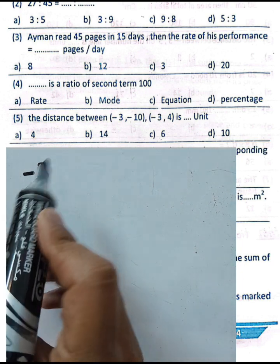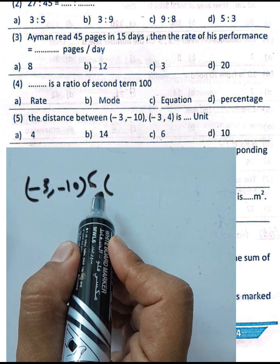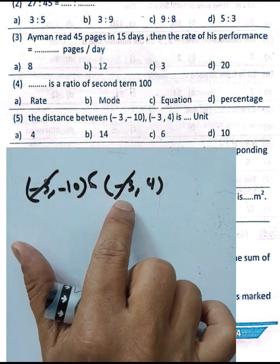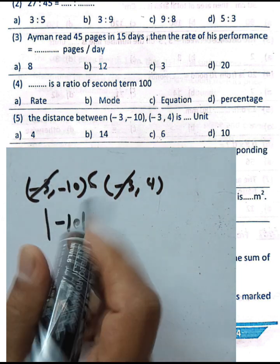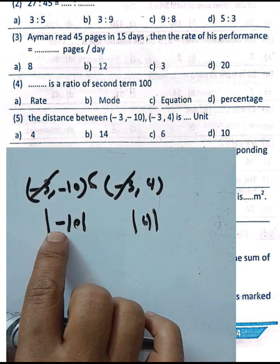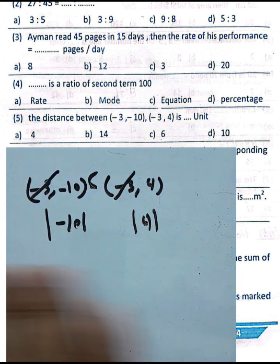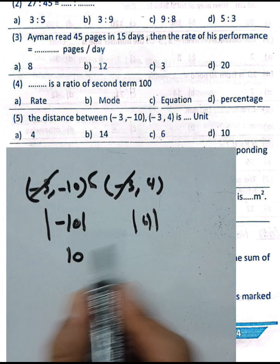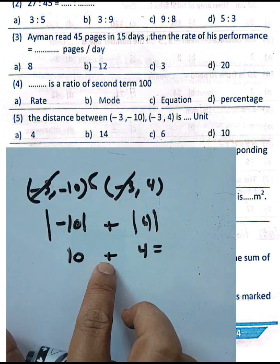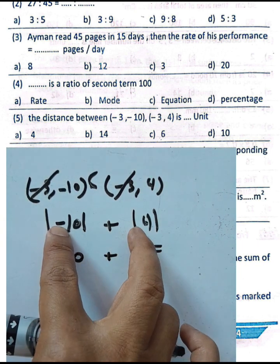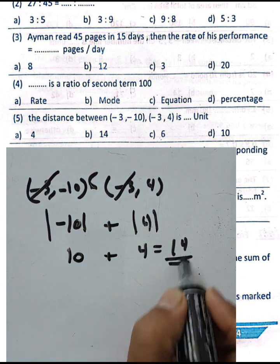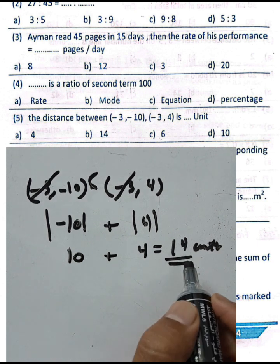Question number five: the distance between two points — first point (−3, −10) and second point (−3, 4). Cancel the similar projections. The absolute value of −10 is 10 and of 4 is 4. Since the signs are different (negative and positive), we add them: 10 plus 4 equals 14.